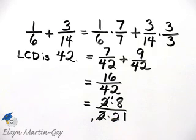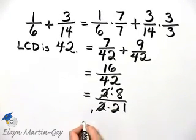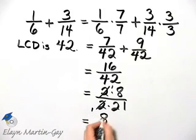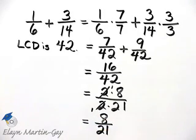common factors divide out or in essence we are removing a factor of 1. So I have finally then 8 over 21 as my sum in simplest form.